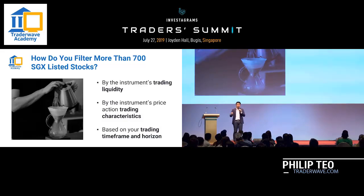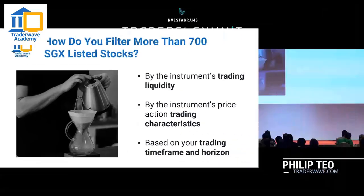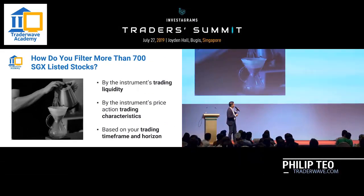These are the main three criteria that I use to filter the list of stocks. Just by using these three elements, it can filter down very quickly to a small number of stocks already. Firstly, it's by the instrument's trading liquidity.